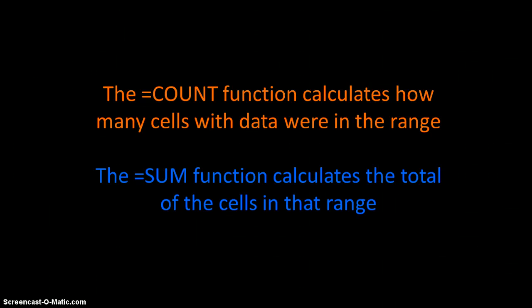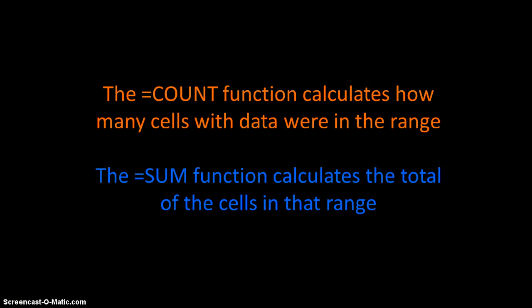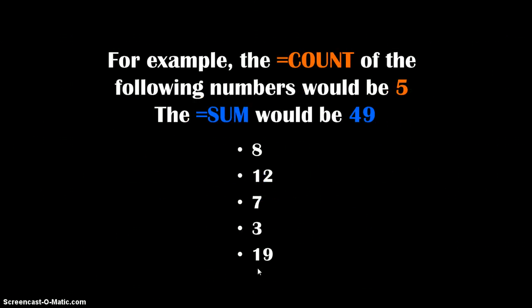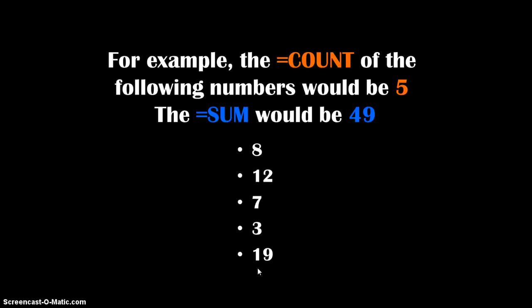The COUNT function in Excel calculates how many cells with data were in the range. COUNT doesn't add up the sum of those cells — it only counts the cells themselves. The SUM function calculates the total or the sum of the cells in that range. For example, if you have a list of numbers, the COUNT of five numbers would be 5, and the SUM would be 49 if they all add up to 49.